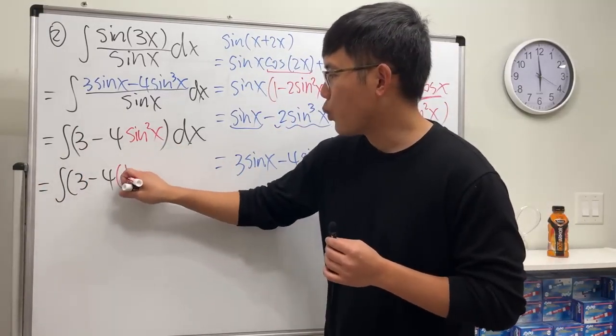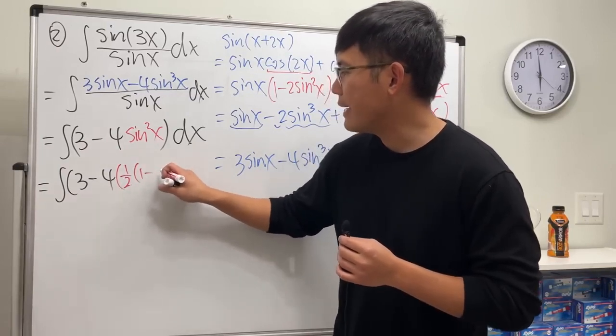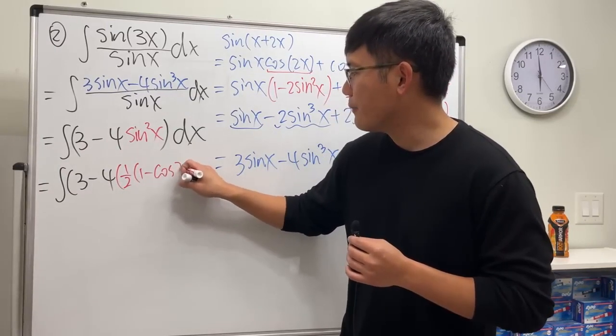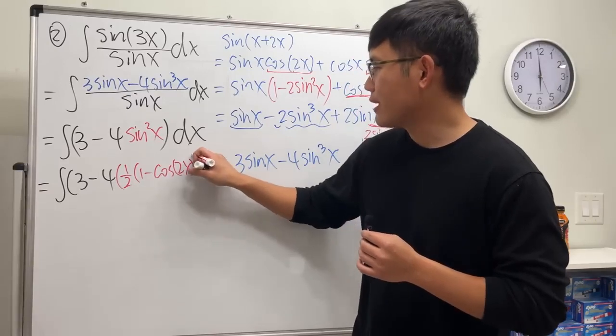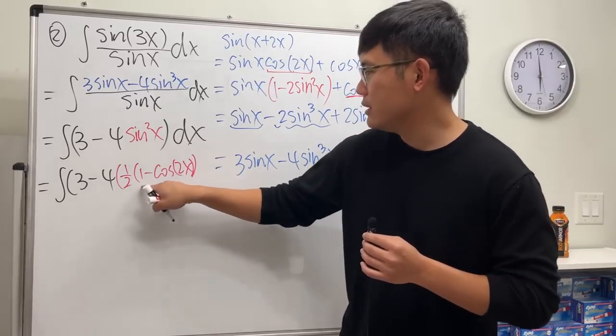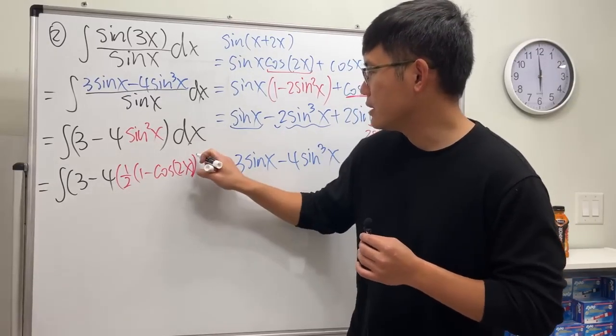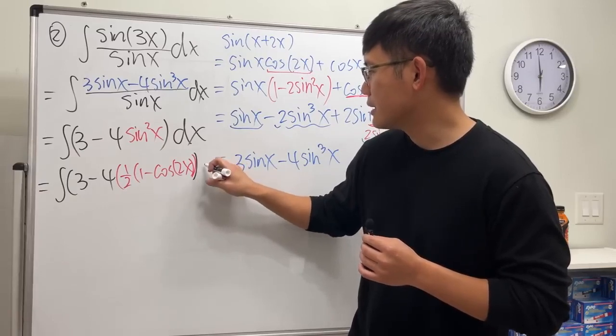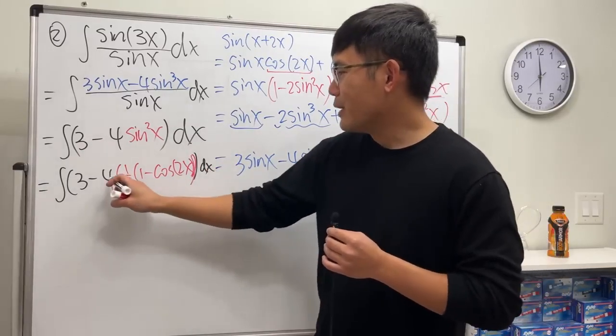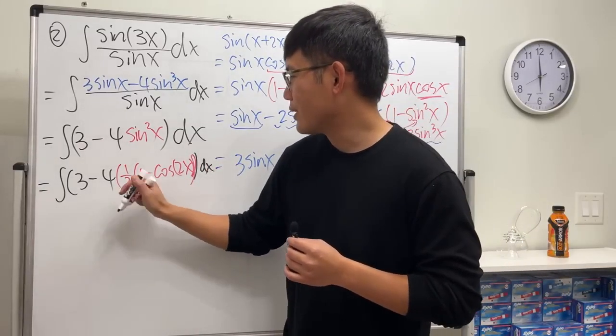I will write this as one half times 1 minus cosine of 2x. Yeah, I know it's a lot of crazy things going on, so parentheses here, parentheses here, and then dx.